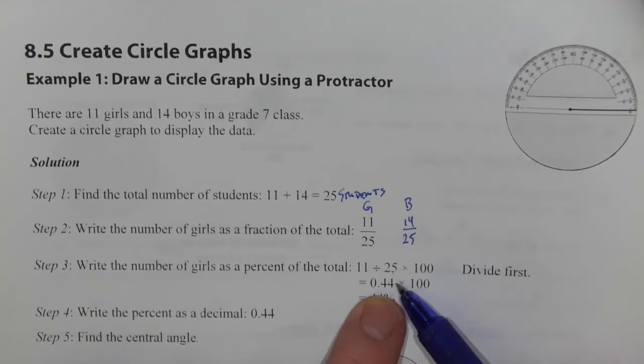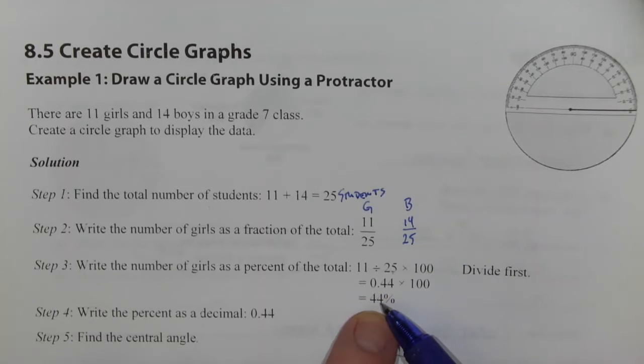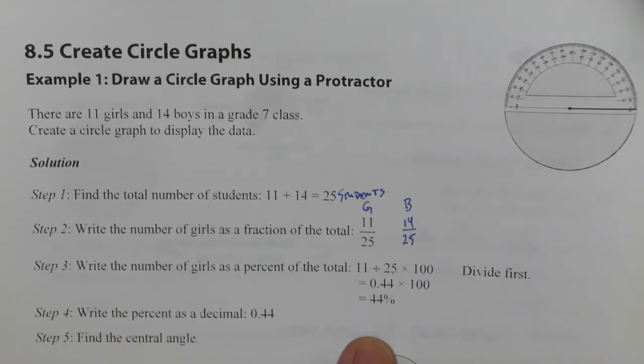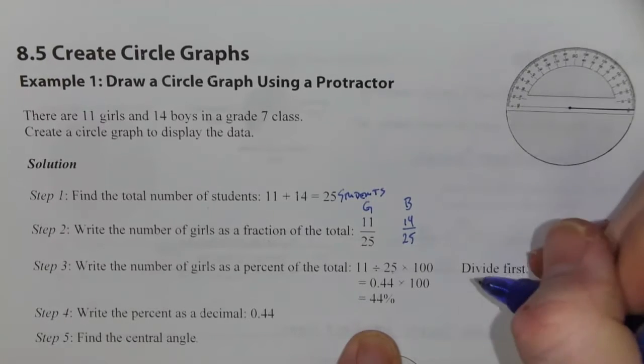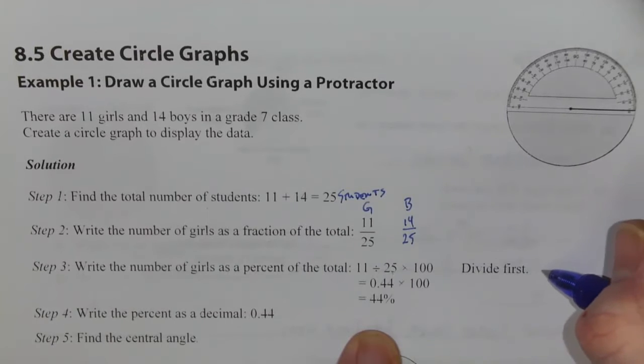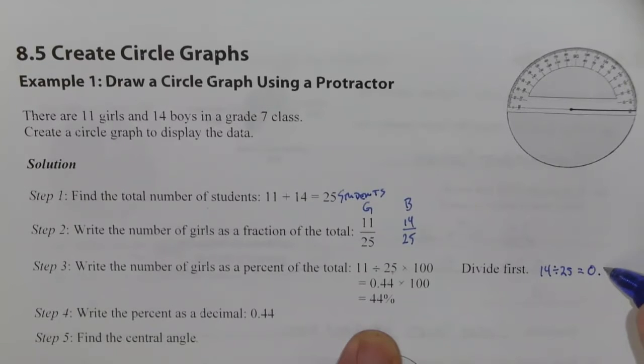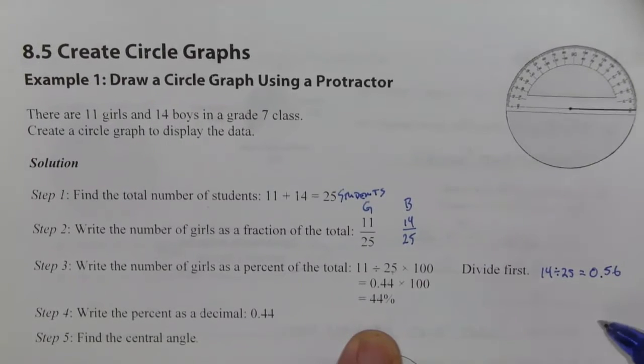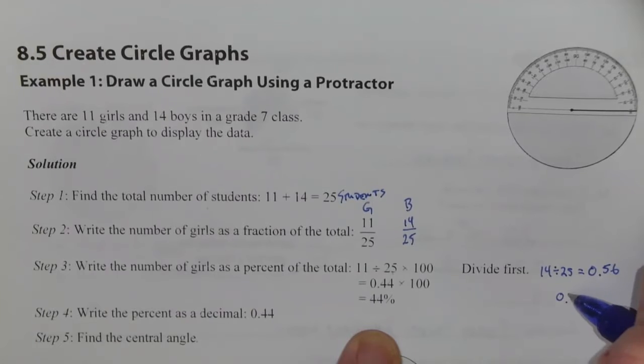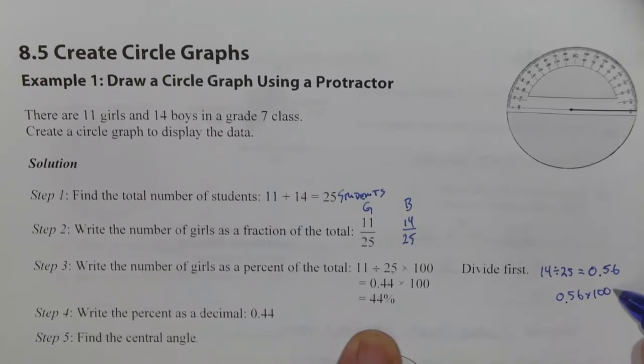Which is 0.44, and then multiply that by 100 and you'll get 44 percent. So the girls are 44 percent. And the boys, we can do the same thing: 14 divided by 25, and that gives us 0.56. And then 0.56 times 100 gives us 56 percent.